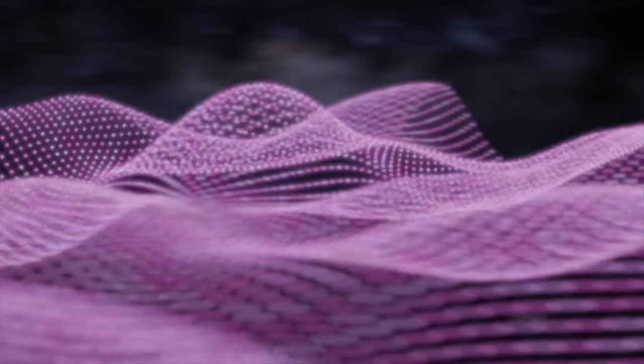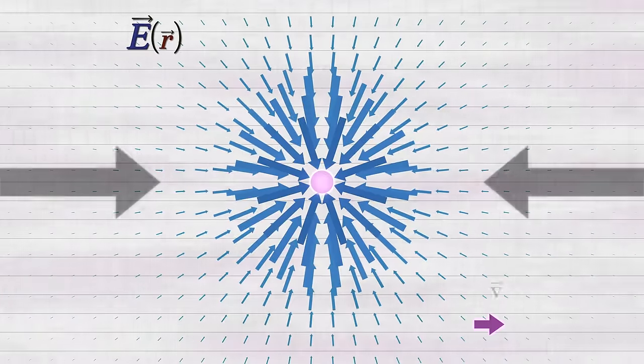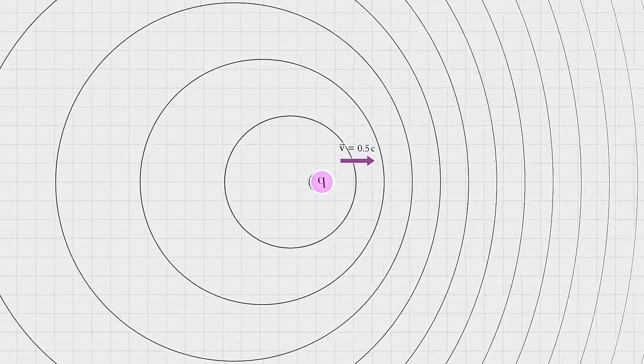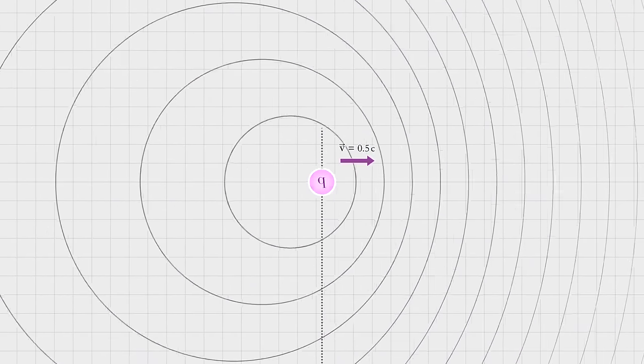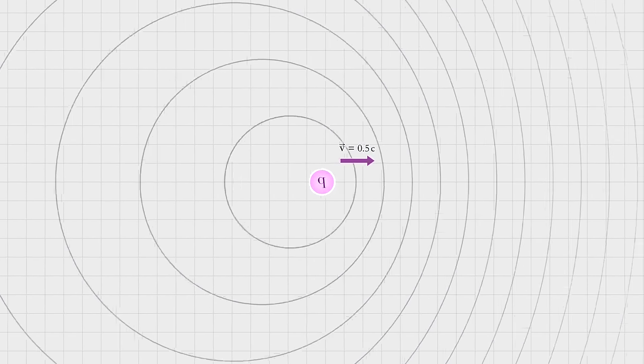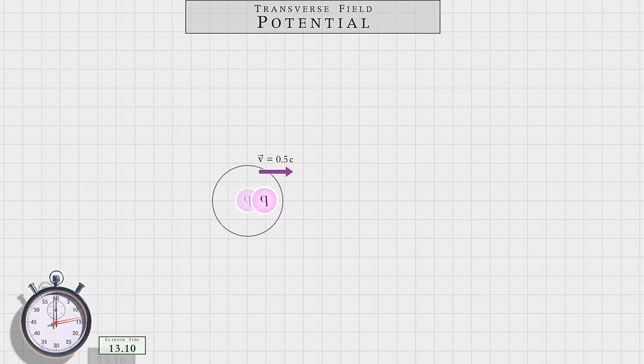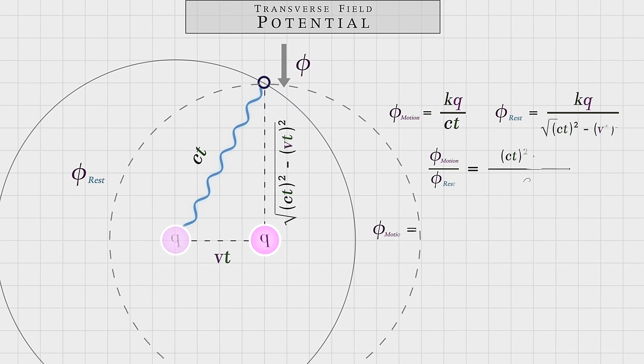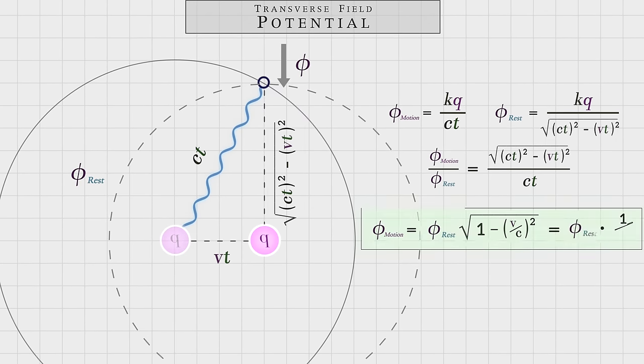Of course, there's still the remaining physical difference of the field pancaking, which we can now understand by considering how the potential of the moving charge is affected along the transverse direction. As before, let's start by considering a single wavefront. Here we see that as the charge moves, this wavefront has further to travel, but winds up at a shorter distance out from the charge. Hence, signal retardation requires the potential is weakened there with respect to a charge at rest. As some quick math shows, this weakening occurs by the factor of 1 over gamma.